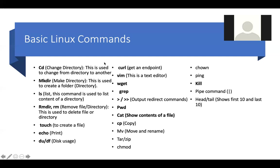PWD — Present Working Directory — shows you where you currently are. If you're lost navigating different folders, type PWD and it tells you your current location. Cat is also very important — it shows the content of a file. For example, if you have a resume file and want to see what's inside it, use 'cat filename' and it will print all the content.